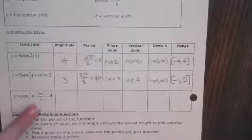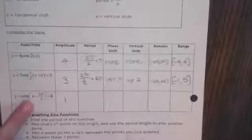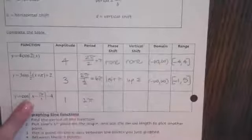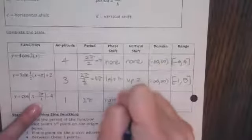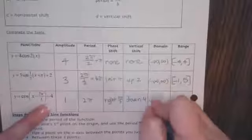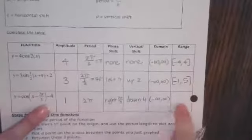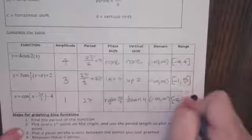Here is another one that has no A value, so the amplitude is going to be the same as the parent function, which is one. There is no B value, so the period is the same as the parent function, which is two pi. This is moved to the right two pi over three and down four units. For our range, negative four is going to be where the center is, so if we went down one for the amplitude it would be at negative five, and if we went up one from negative four that would be at negative three.